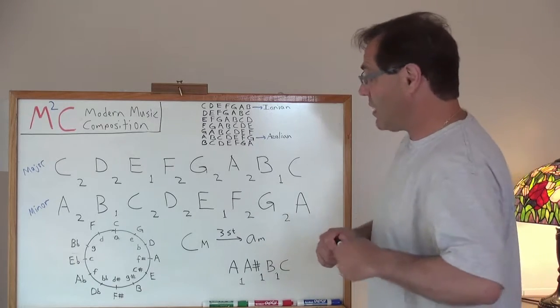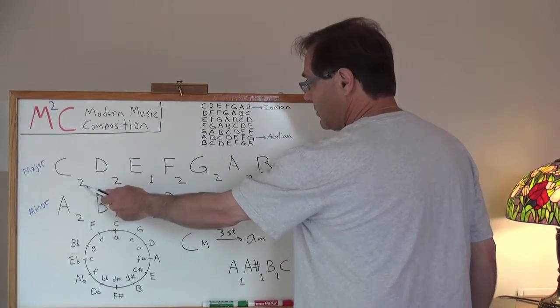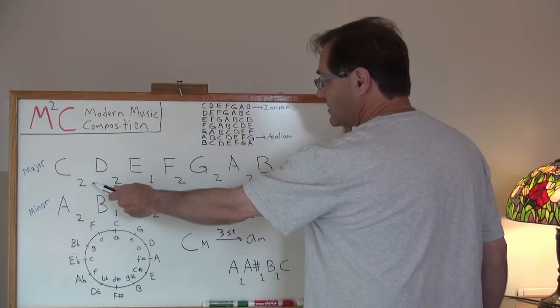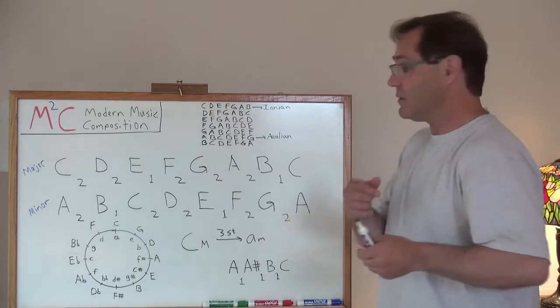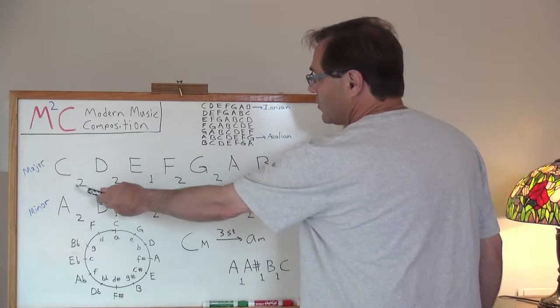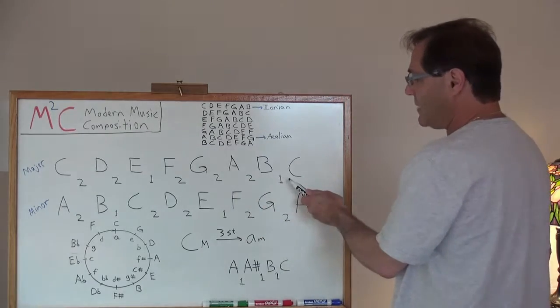For a little bit more review, I want to show you the interval structure that we learned in the previous video. With respect to a major scale, two would be two semitones, so that's a whole tone. It goes whole, whole, semi, whole, whole, whole, semi.